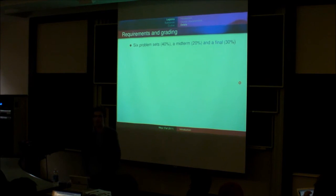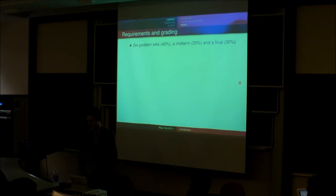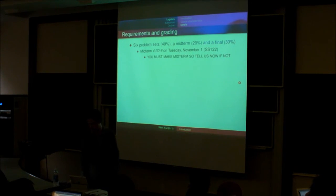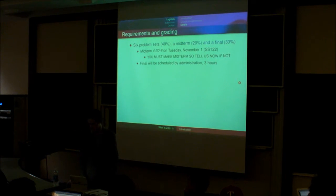So the requirements for the class are going to be 6 problem sets, which will account for 40% of your grade, a midterm, which will account for 20%, and a final, which will account for 30%. The midterm will be 4:30 to 6 p.m. on Tuesday, November 1st in the Social Science Center, room 122. You absolutely have to come to this midterm. It is a requirement for the course. So if you cannot make it, you have to tell us absolutely as soon as possible. So make sure you can come. The final will be scheduled by the administration as usual in the last three hours.